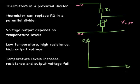So just like an LDR a thermistor can be placed in a potential divider. The thermistor takes the place of R2, and what happens is the output voltage then can depend on the actual temperature levels.